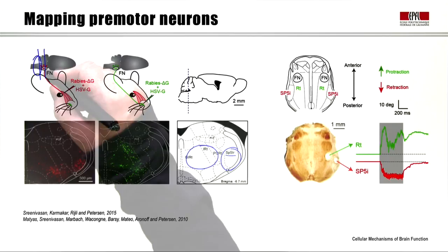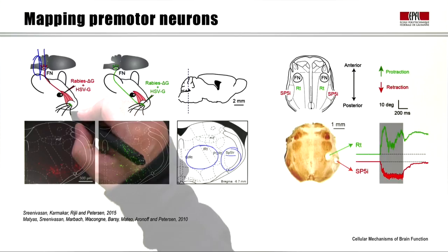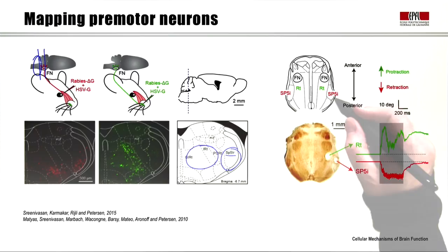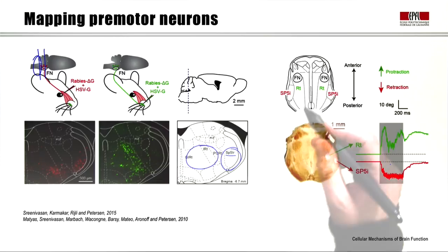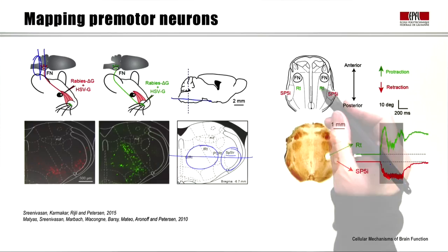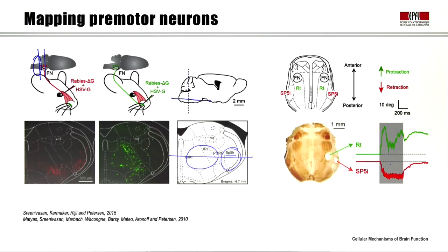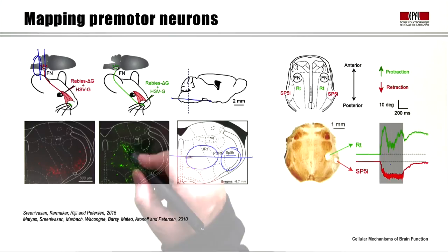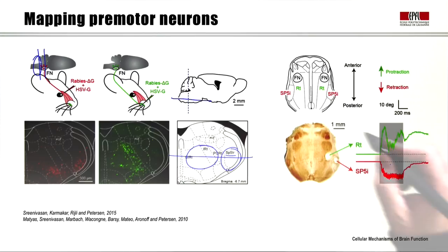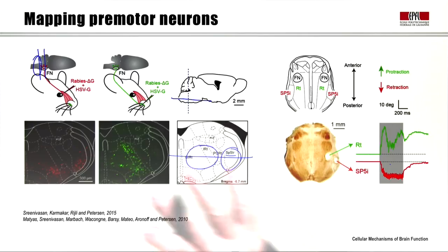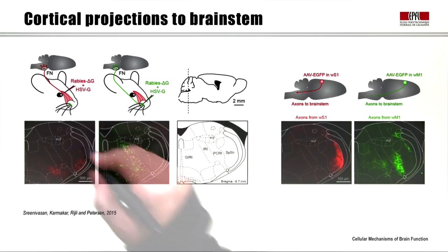One would expect that stimulating these neurons would drive action potential firing in facial nucleus motor neurons and cause whisker retraction or protraction respectively. Indeed, if we place a stimulation electrode in the spinal trigeminal nucleus and drive current through it, it causes retraction of the whisker. And if we stimulate the reticular formation electrically, where there is a high density of premotor neurons innervating intrinsic motor neurons, the whisker moves forwards — compatible with our premotor mapping.